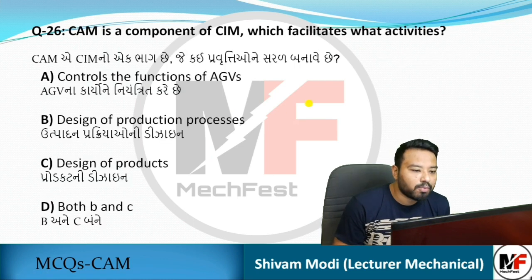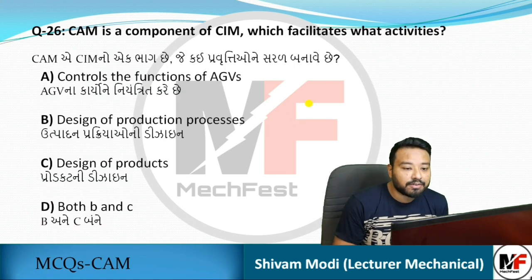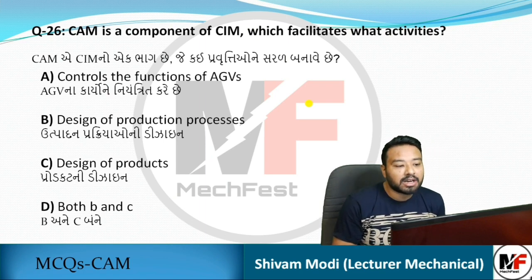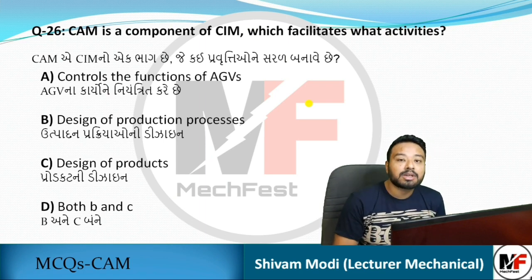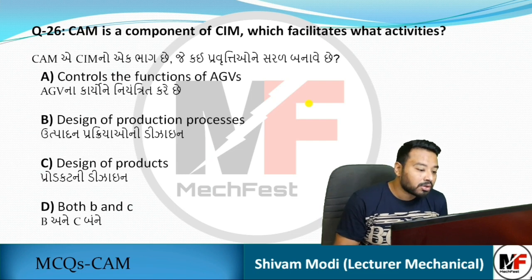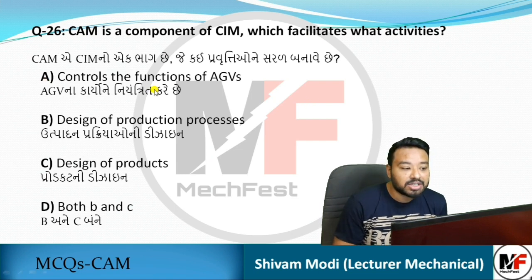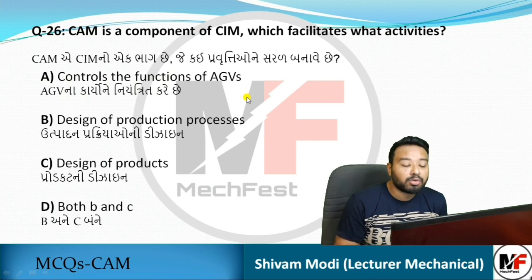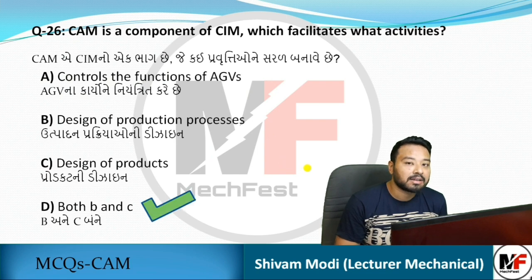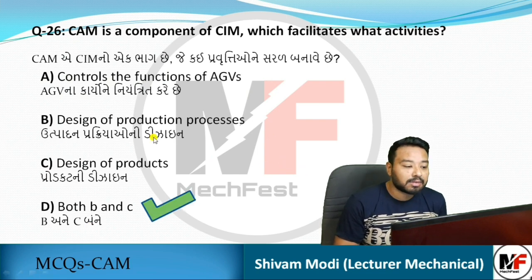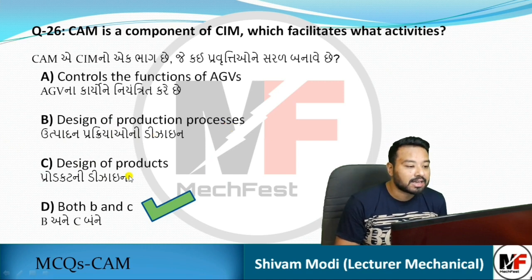Next question: CAM is a component of CIM — which activities does it facilitate? Options include controlling the functions of AGVs, design of production processes, and design of product. The answer is both B and C — design of production processes and design of product.